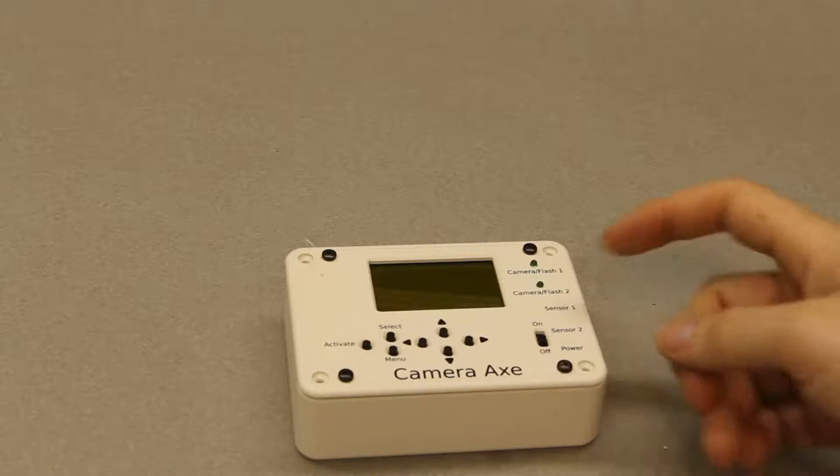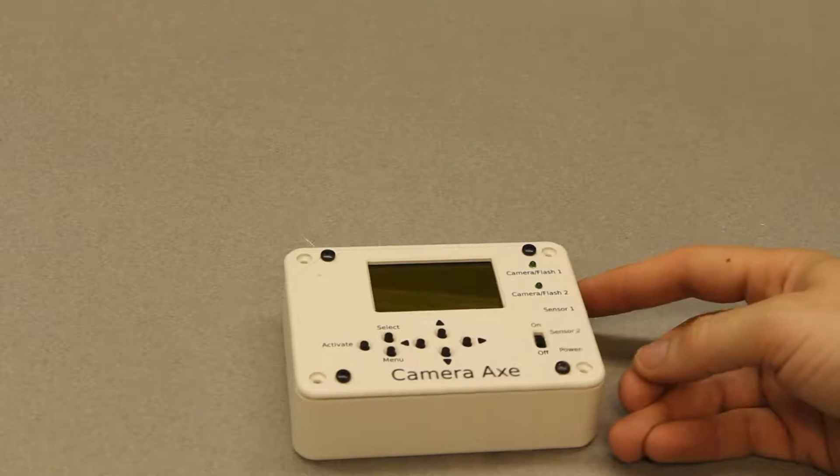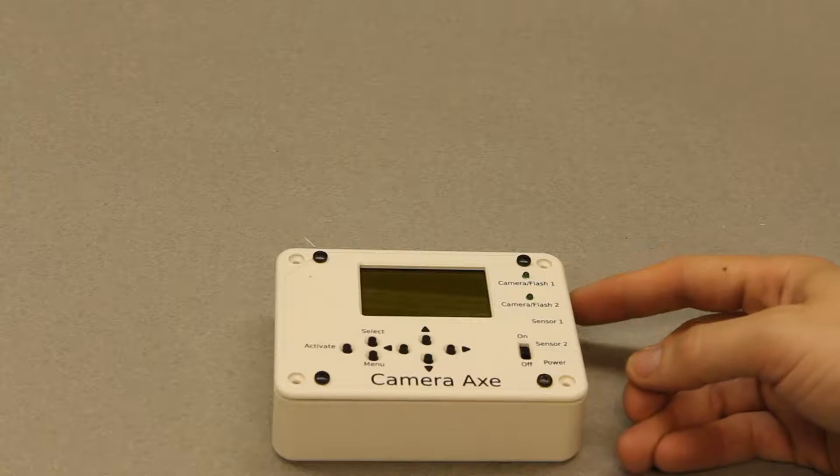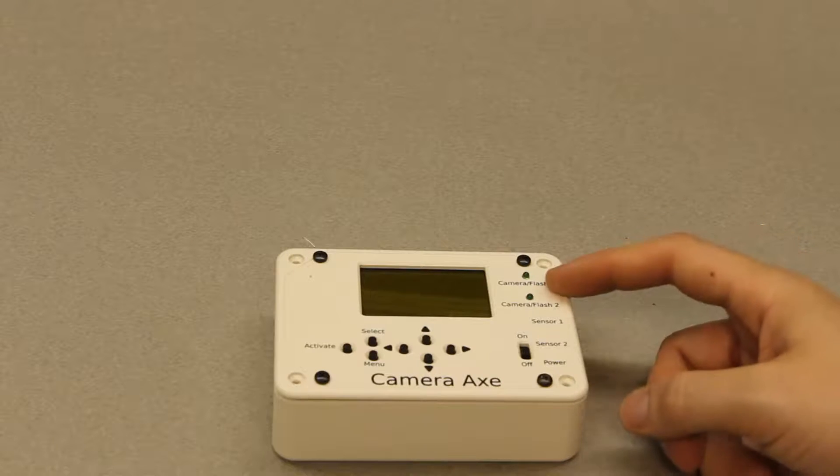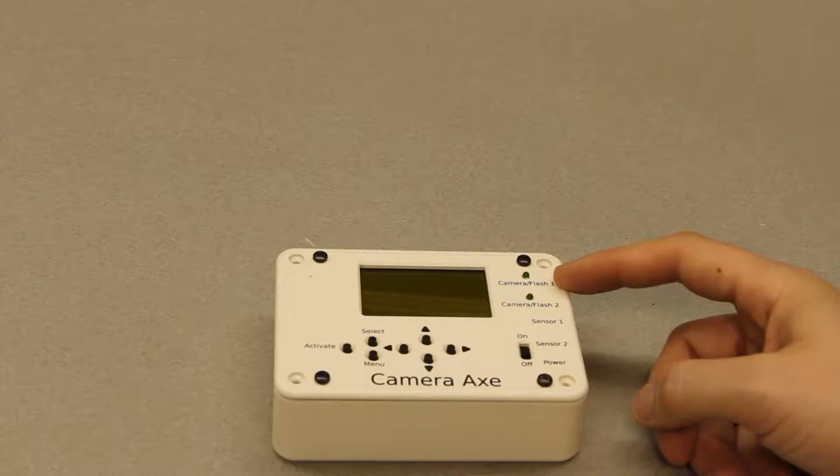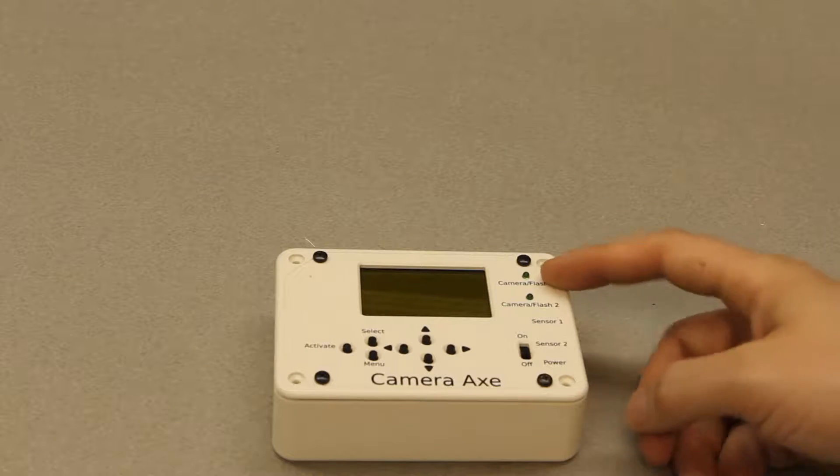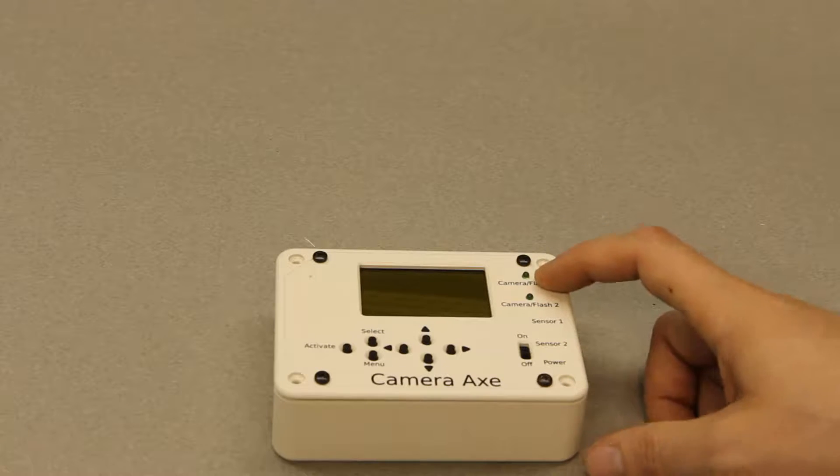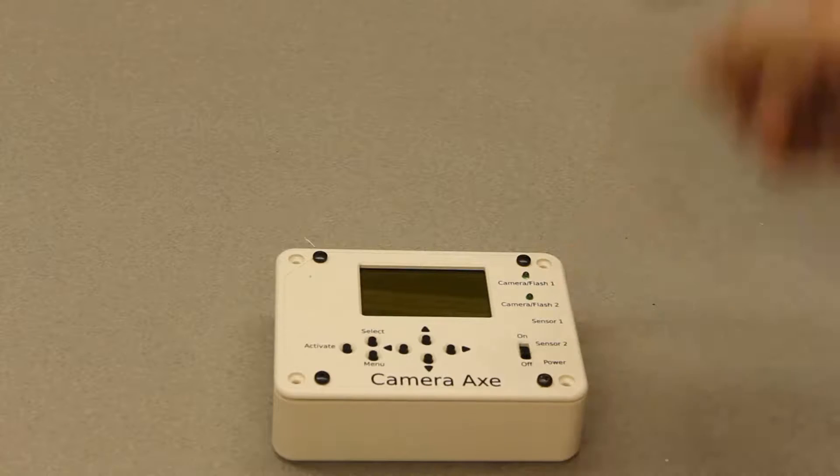Now let's say you accidentally plug that Vivitar flash with its 250 volts DC flowing through this camera flash port. I mentioned before that the camera axe is only designed for 35 volts.